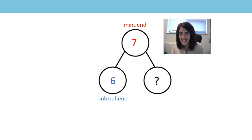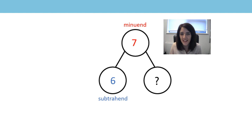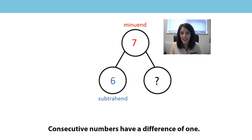Before we start calculating, let's have a little look at the numbers in this part-part-whole model. I've got a seven and I've got the six. They are consecutive numbers, and we know that consecutive numbers have a difference of one. The missing number is one, and the reason it is one is because six is one less than seven and we know that consecutive numbers have a difference of one.